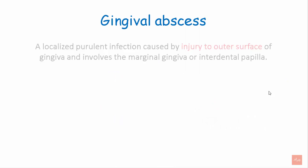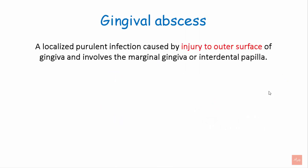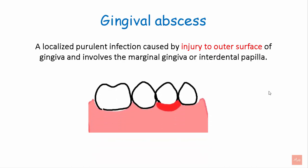A gingival abscess is a localized purulent infection caused by injury to the outer surface of the gingiva, involving the marginal gingiva or the interdental papilla. It presents with a red appearance of the marginal and interdental gingiva, and is limited to the marginal and interdental gingiva without involving the supporting periodontal structures.